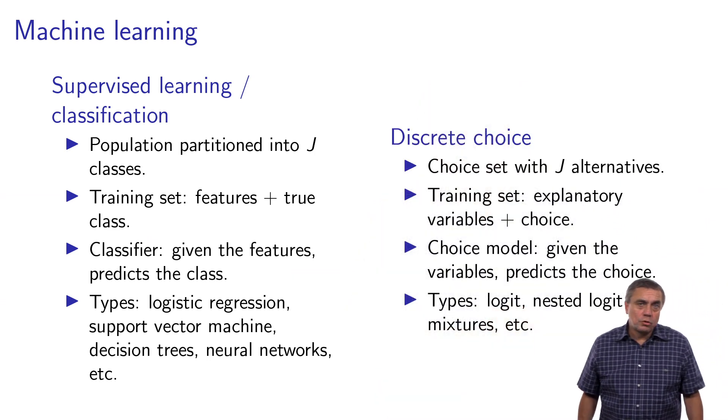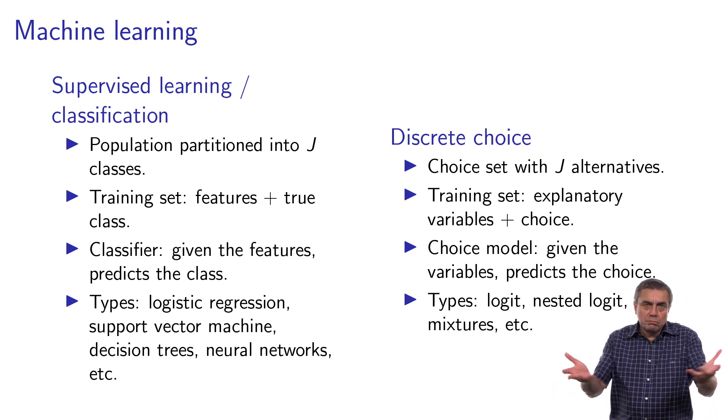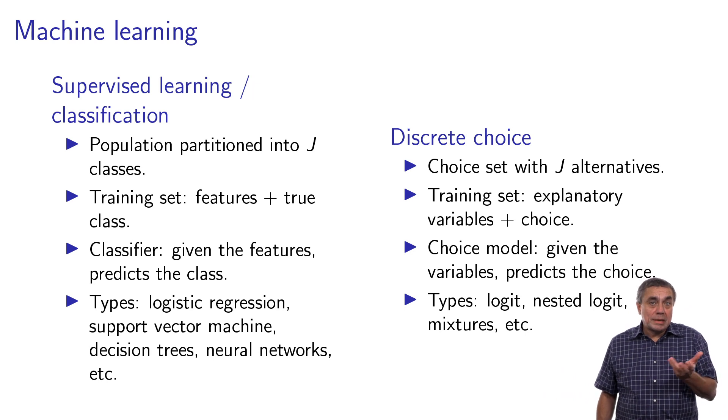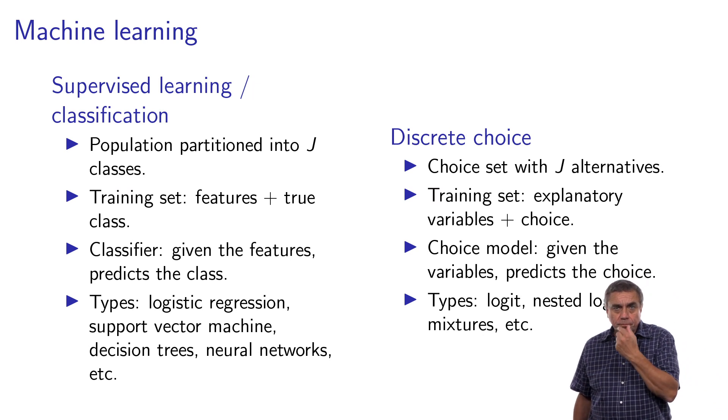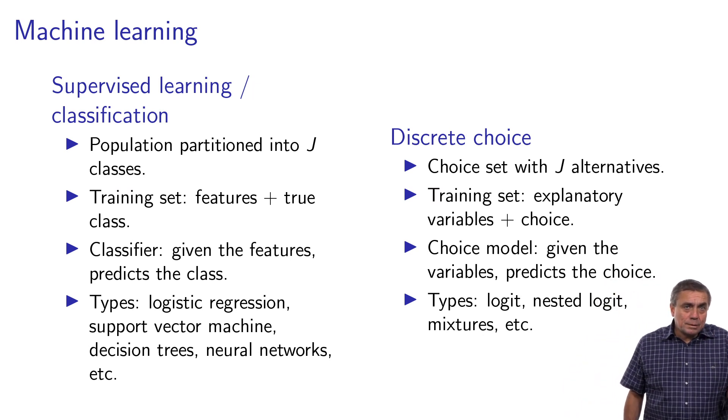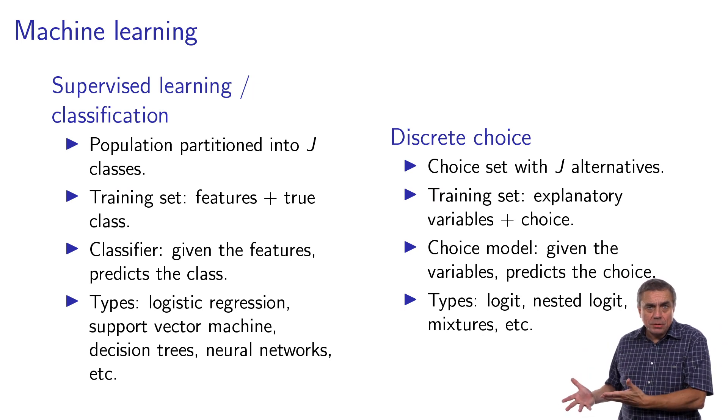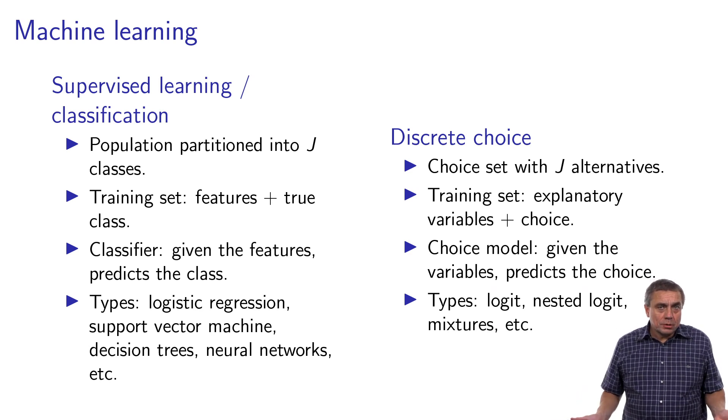In discrete choice, we call the classes the alternatives, and they form a choice set. The features, we call them explanatory variables, and the true class is the observed choice. The classifier, we call it a choice model. Given the explanatory variables, we predict the choice.